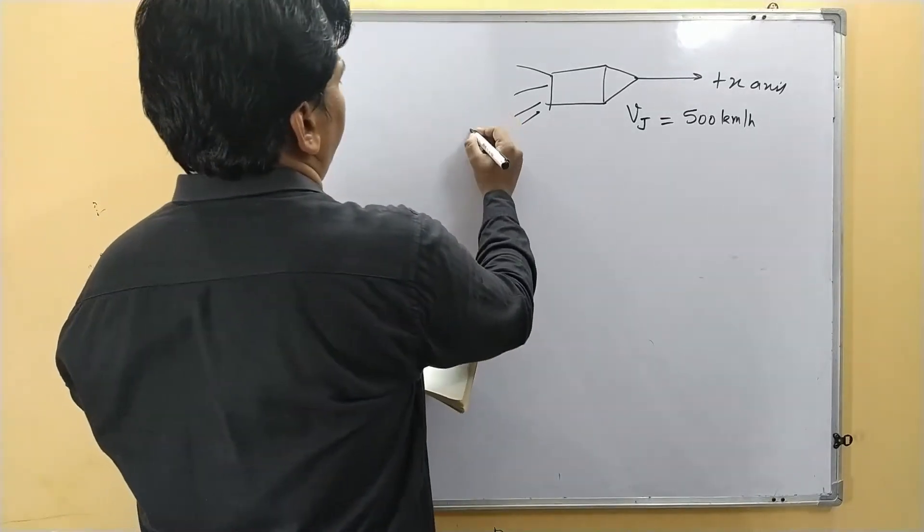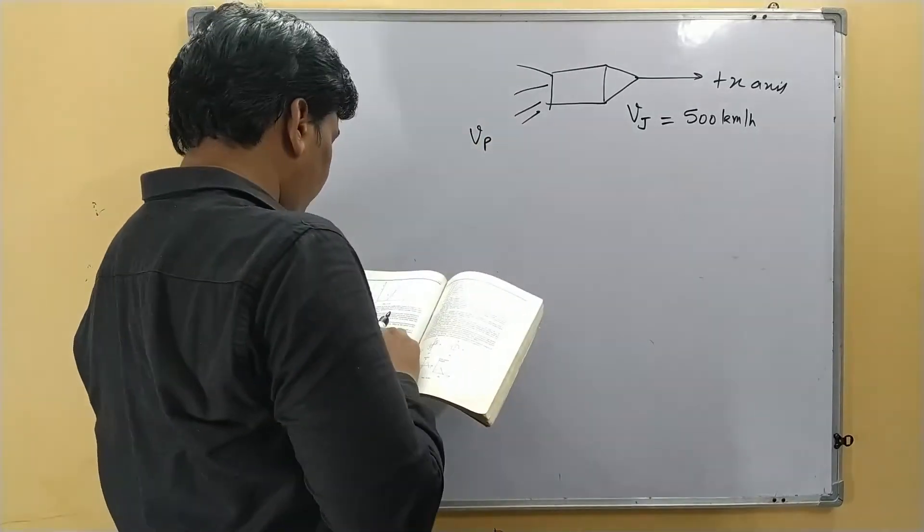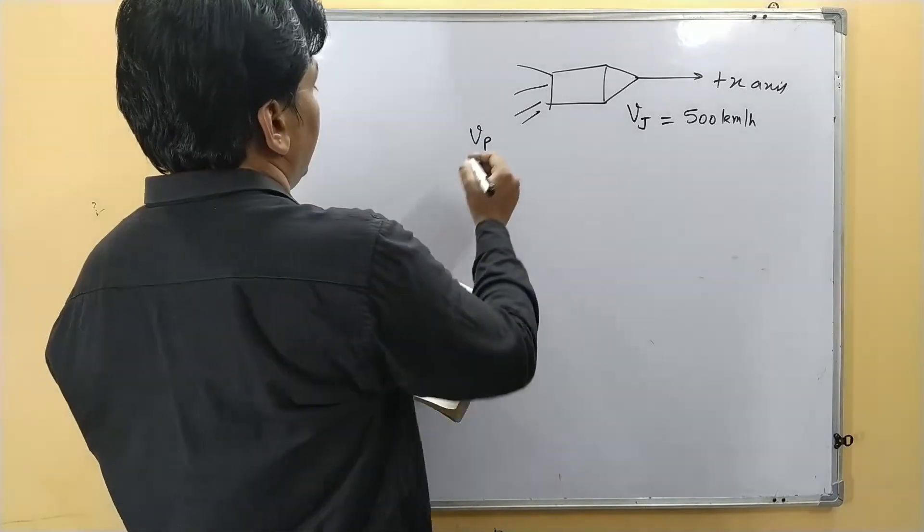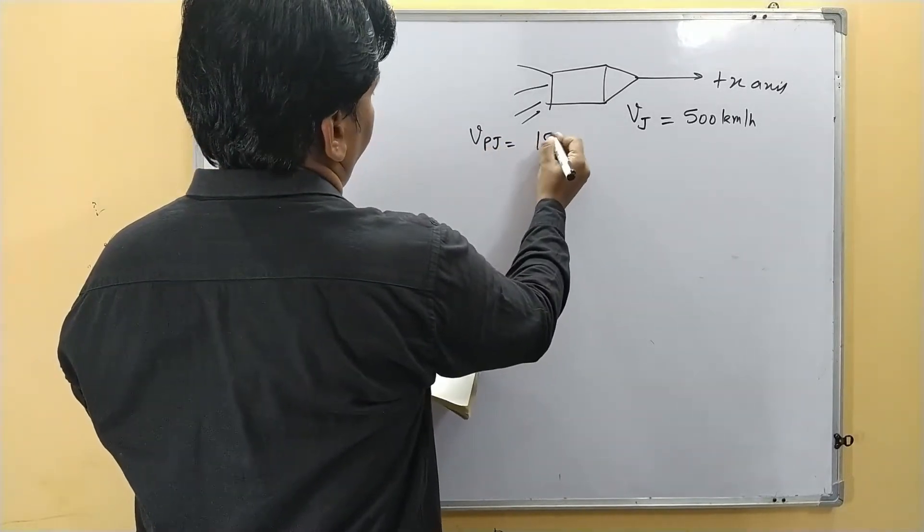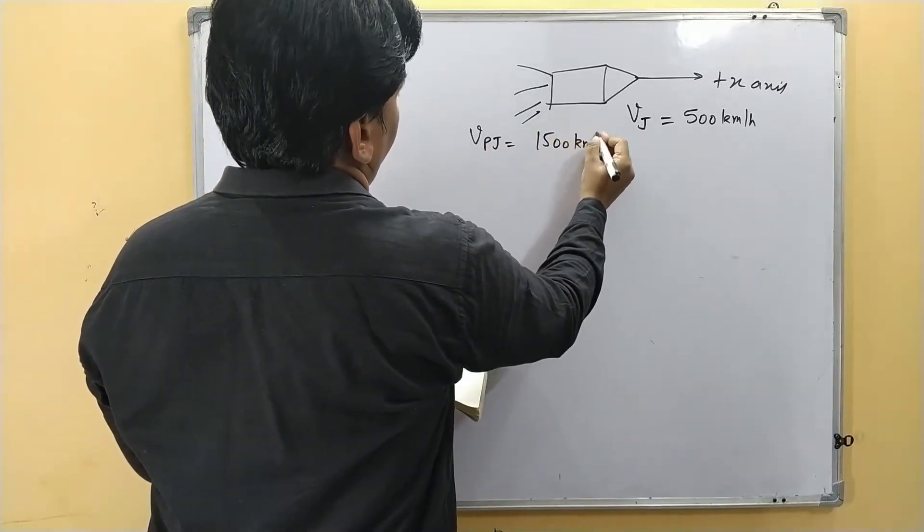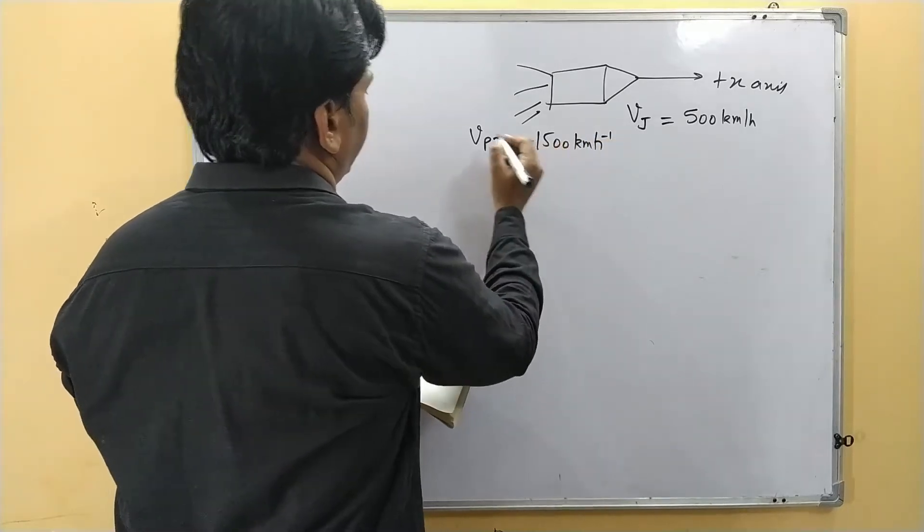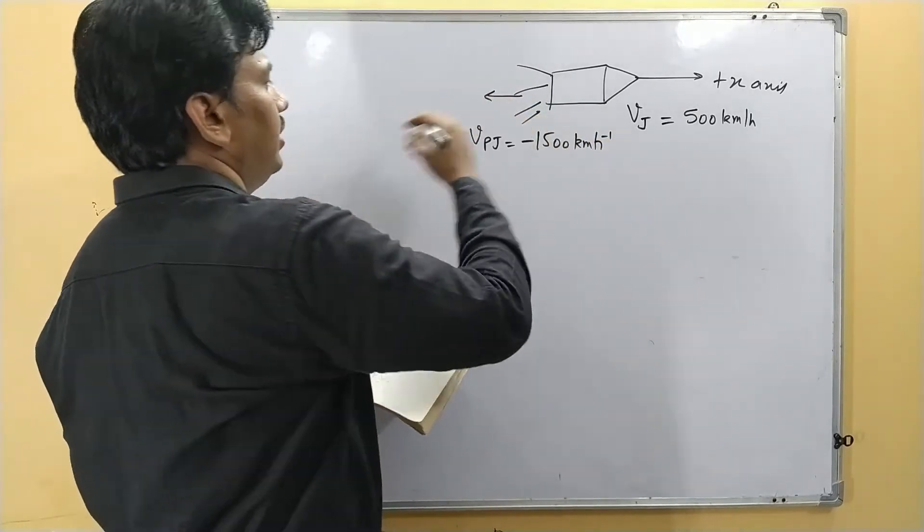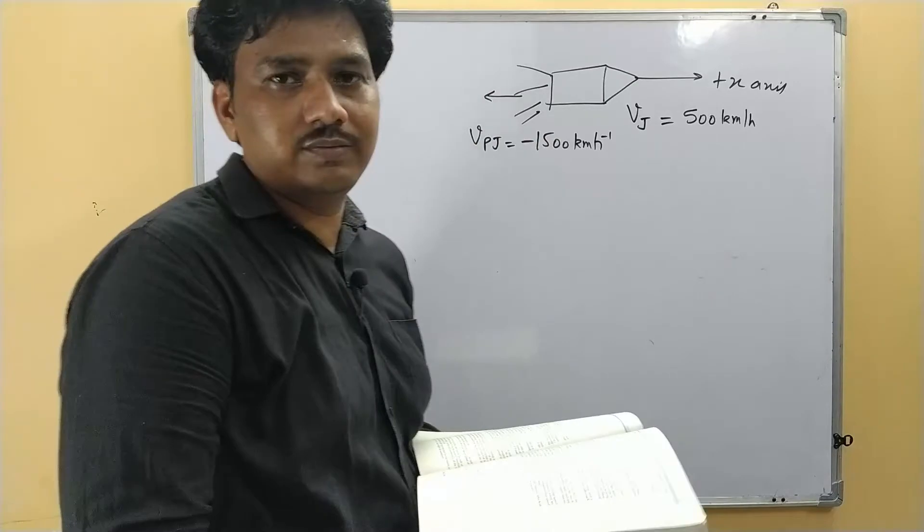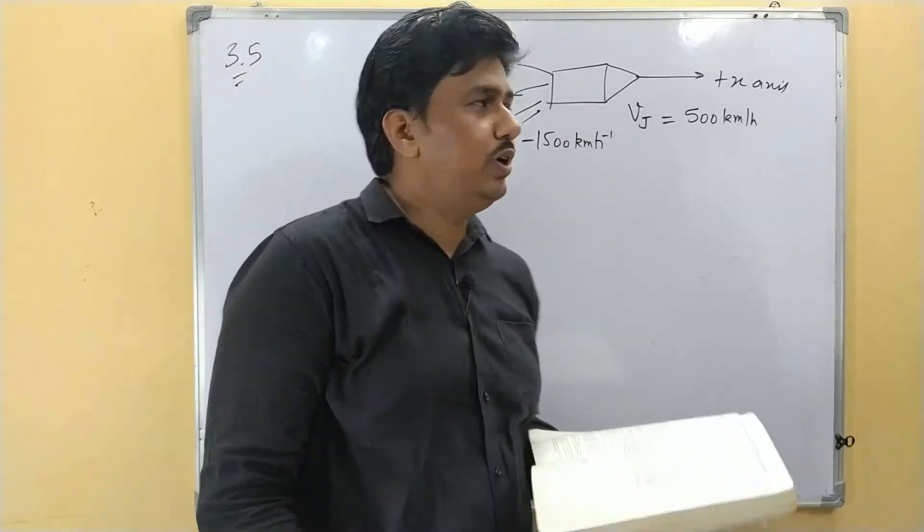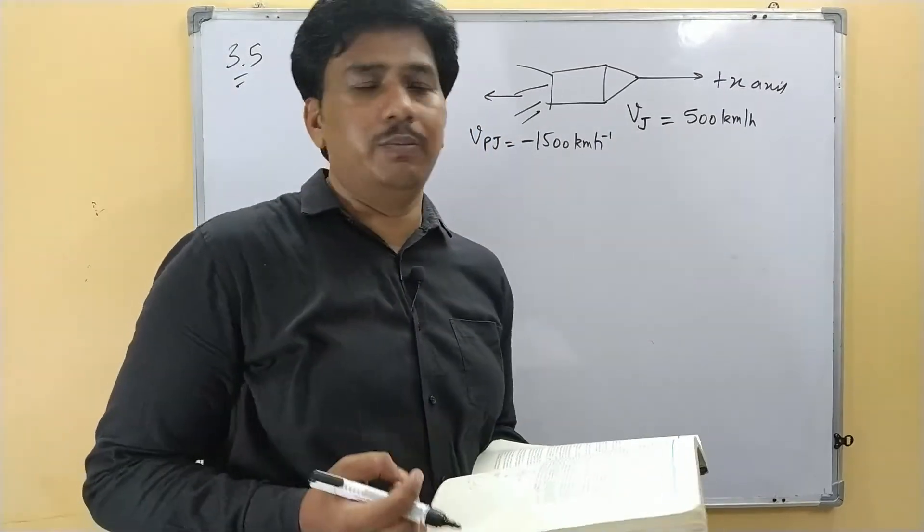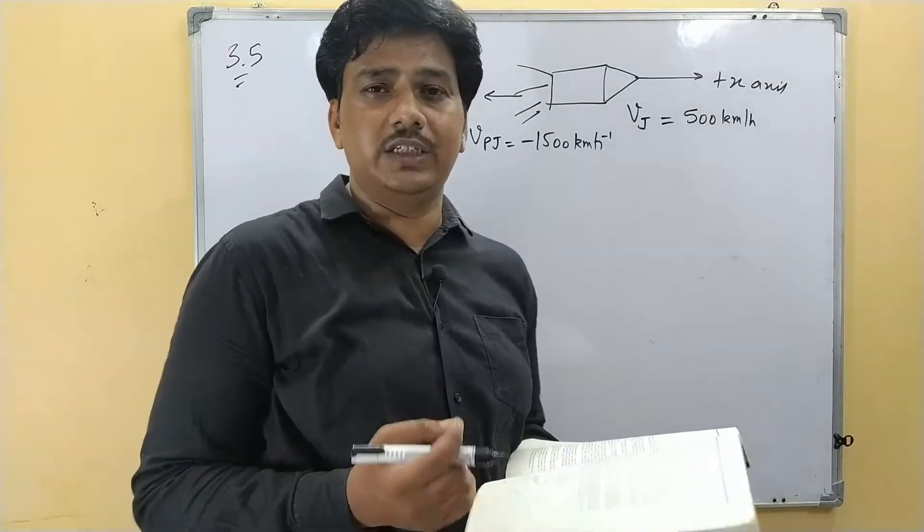And the velocity of the products of combustion with respect to the jet plane is 1500 km per hour, but I am going to take here negative sign because it is in the minus x-axis. The product is going in the negative x-axis.